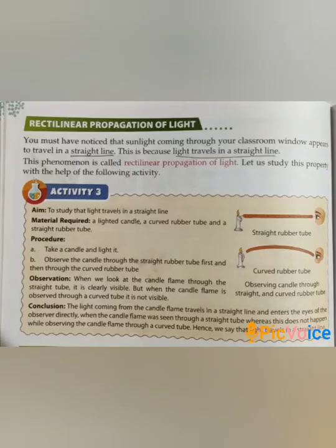Rectilinear propagation of light. Children, you must have noticed that sunlight coming through your classroom window appears to travel in a straight line. This is because light travels in a straight line. This phenomenon is known as rectilinear propagation of light. Here one activity is given — read this activity, through which you can understand better.